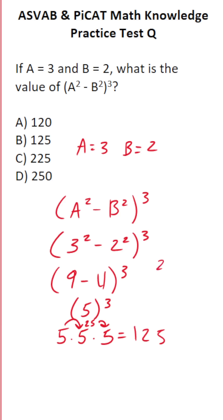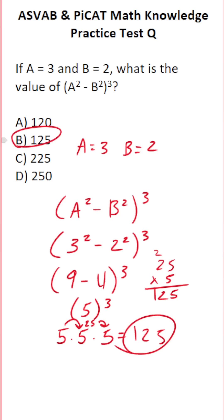That said, you could always do it off to the side very quickly: 5 times 5 is 25, carry the 2; 5 times 2 is 10, plus 2 is 12. So the answer to this one is B, 125.